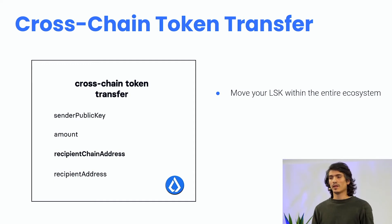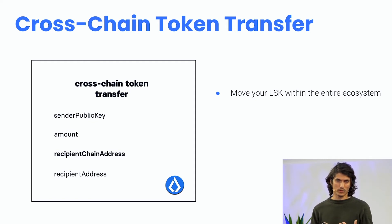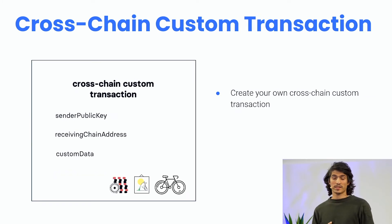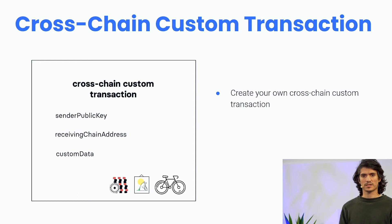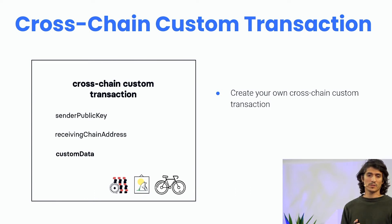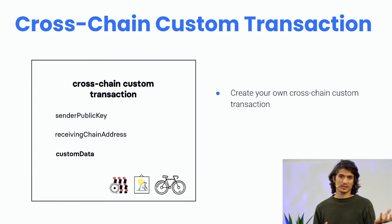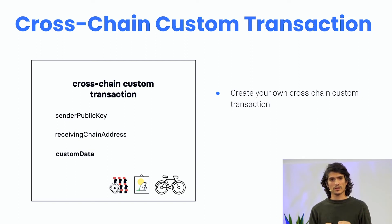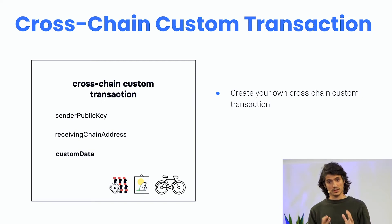With this transaction, users will be able to move their LSK tokens within the entire ecosystem, and this transaction will be part of the global protocol of the ecosystem, meaning every chain in the LISC ecosystem will be able to process it. The second transaction being specified is the cross-chain custom transaction, which contains the custom data property. This property encapsulates the data needed for a custom transaction, meaning developers can create their own custom transaction and immediately upgrade it to a cross-chain custom transaction just by including it in the custom data.